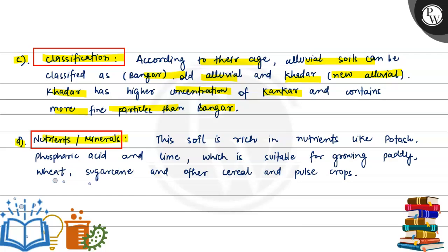The fourth point is nutrients. This soil is rich in nutrients like potash, phosphoric acid, and lime, which makes it suitable for growing paddy, wheat, sugarcane, and other cereals and pulse crops.